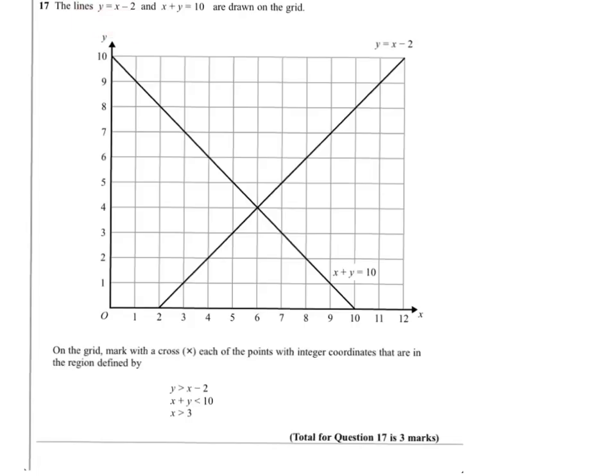So the lines y equals x minus 2 and x plus y equals 10 are drawn on the grid.